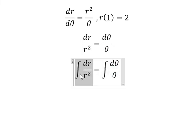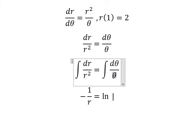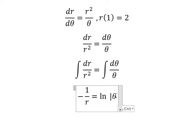The integral of this one you get negative one over r. The integral of this one you get ln of the absolute value of theta. And we put C in here.